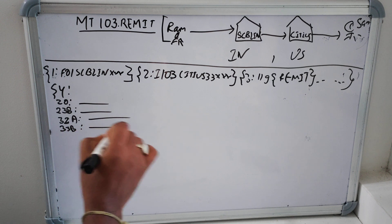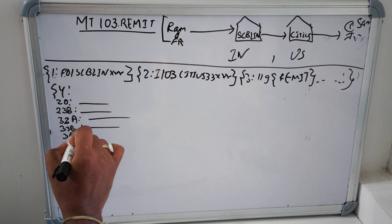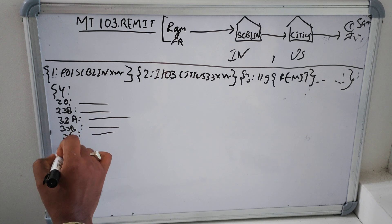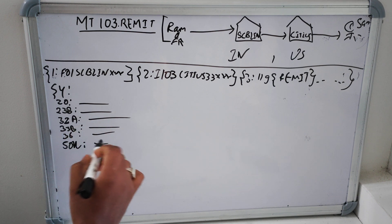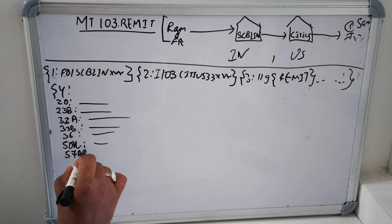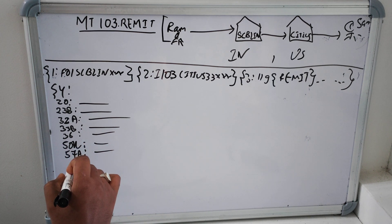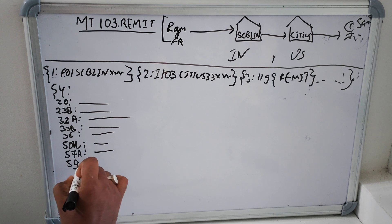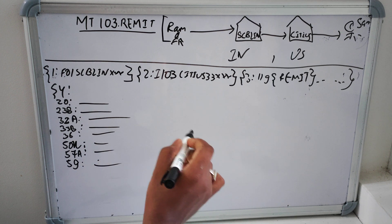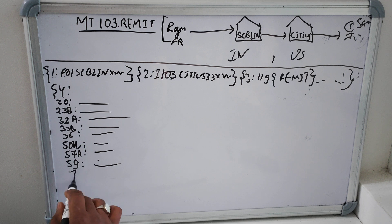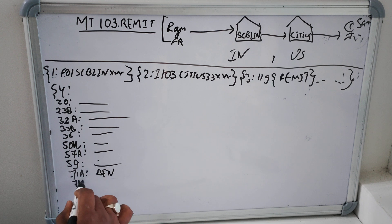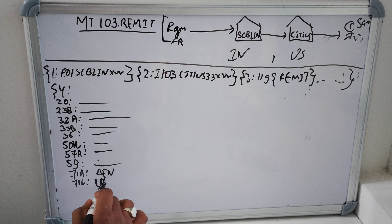Then we have 33B exchange rate and then 50K which is ordering customer details, 57A account institution basically USTRIPLEXXXX, 59 is final beneficiary let's say Sam and account number and those information. And then we have 71A charge details let's say it is SHA, 71F let's say 10 USD.